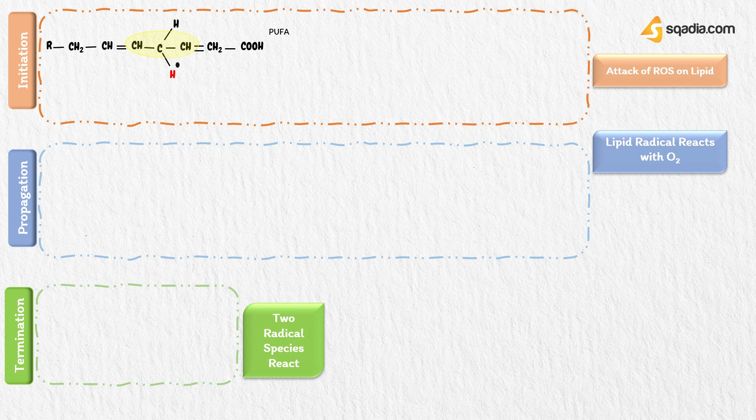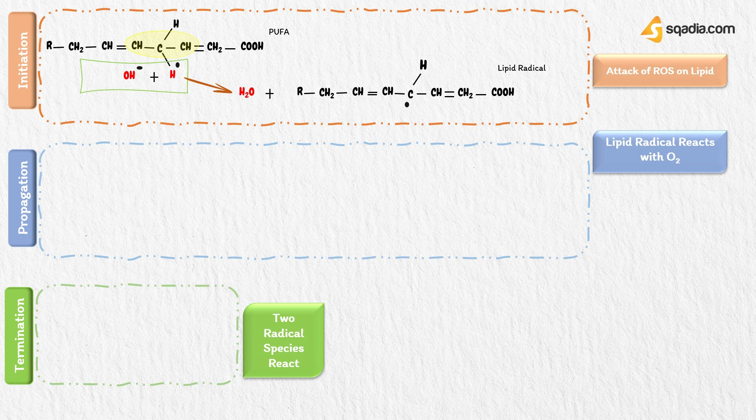In the initiation step, there is a methylene bridge in between two double bonds in polyunsaturated fatty acid. Hydroxyl radical attacks a hydrogen of the methylene bridge and takes away hydrogen as a free radical, thus a water molecule will be formed. An unstable lipid radical will also be formed.